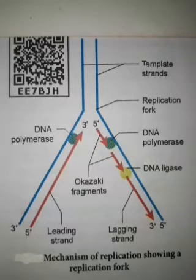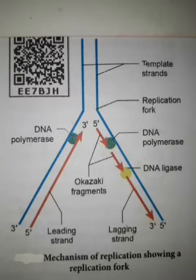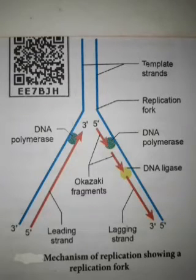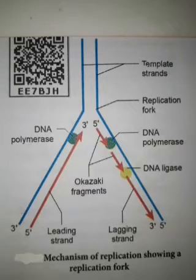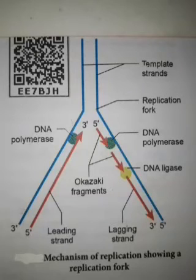In prokaryotes there is one origin of replication and in eukaryotes there are several origins of replication. In eukaryotes there are 5 types of DNA polymerases involved in replication. There are likewise several origins of replication in eukaryotes.